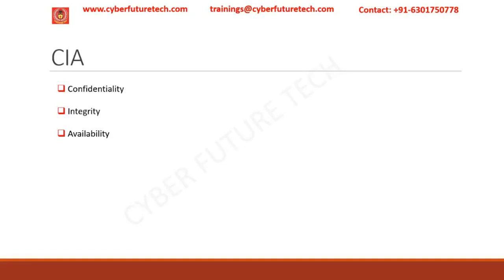CIA — confidentiality, integrity and availability — is a model designed to guide policies for information security in an organization. Confidentiality, as the name implies, equals privacy. It is designed to protect sensitive data from unauthorized users by setting rules that limit access to information, for example by encrypting data, using two-factor authentication, using tokens, etc.